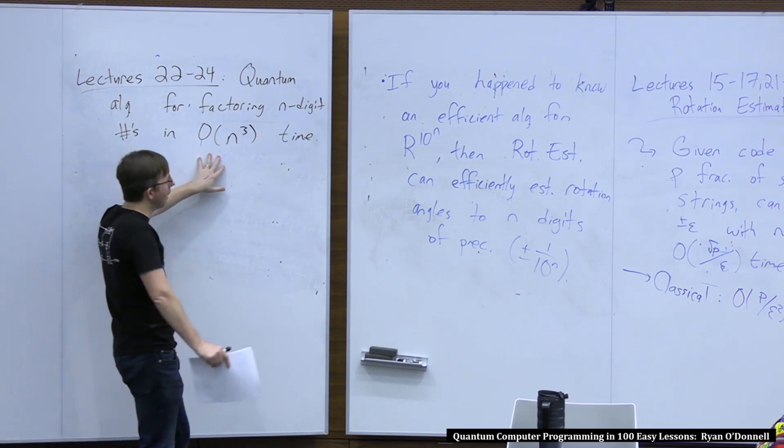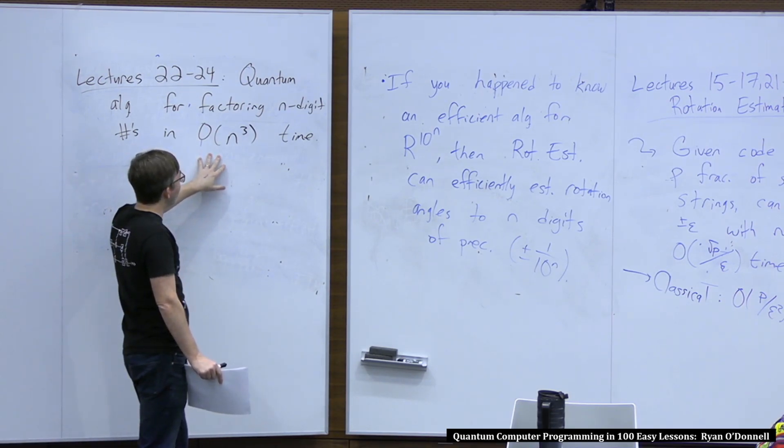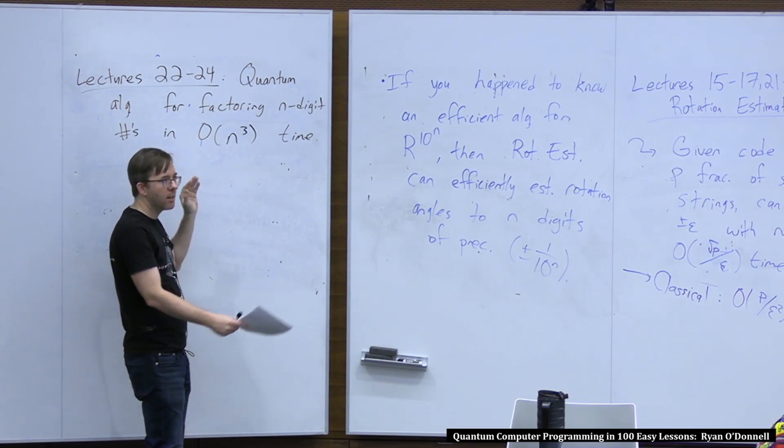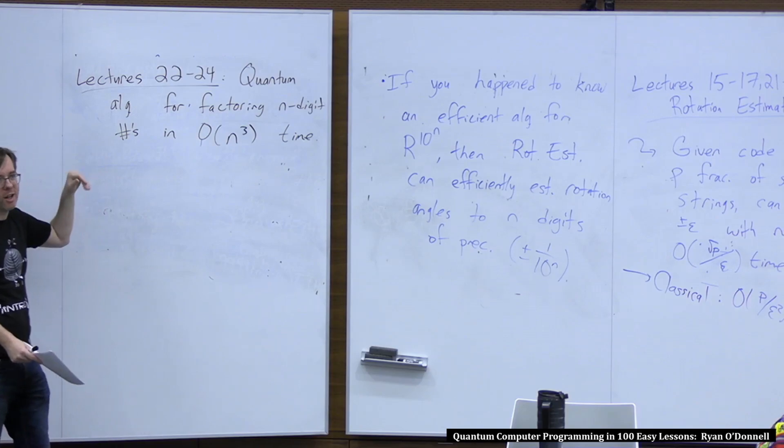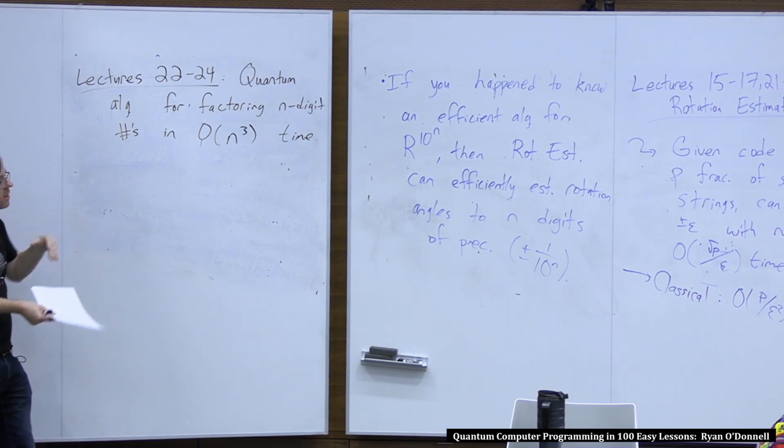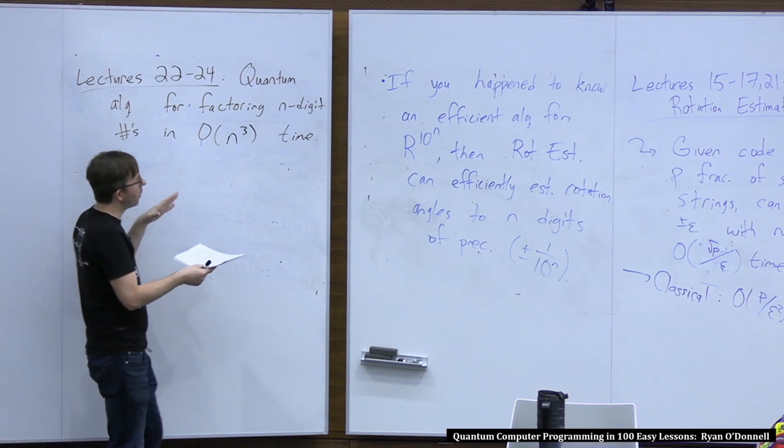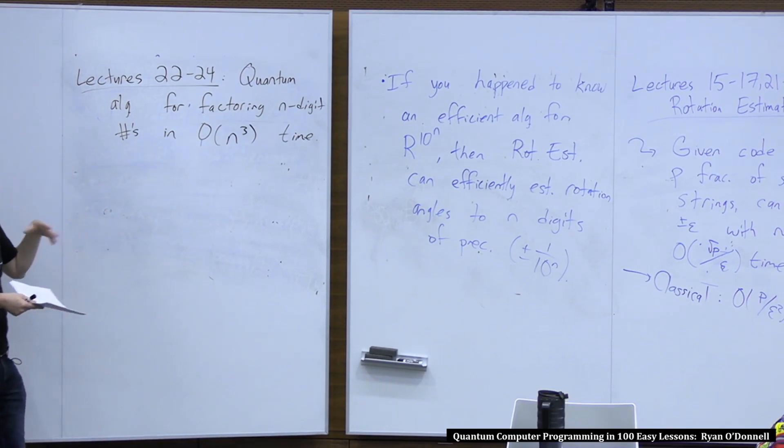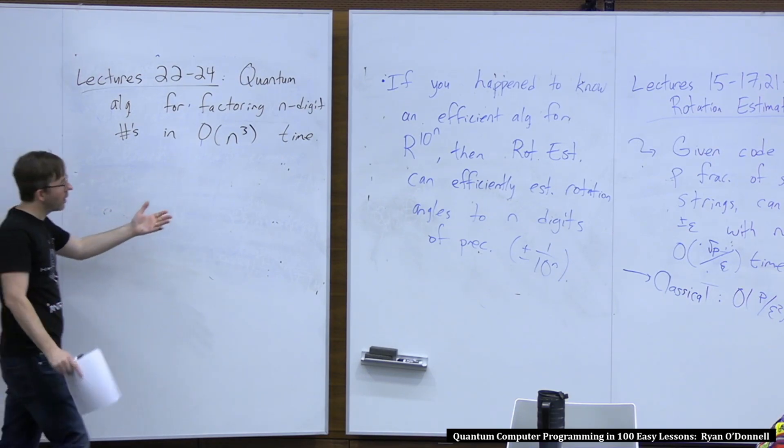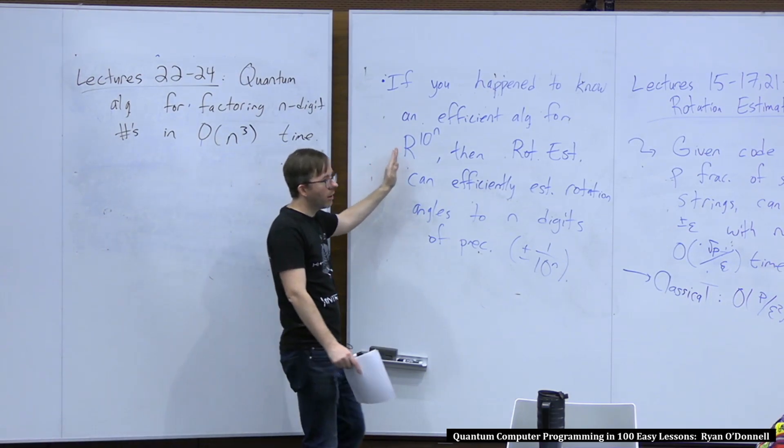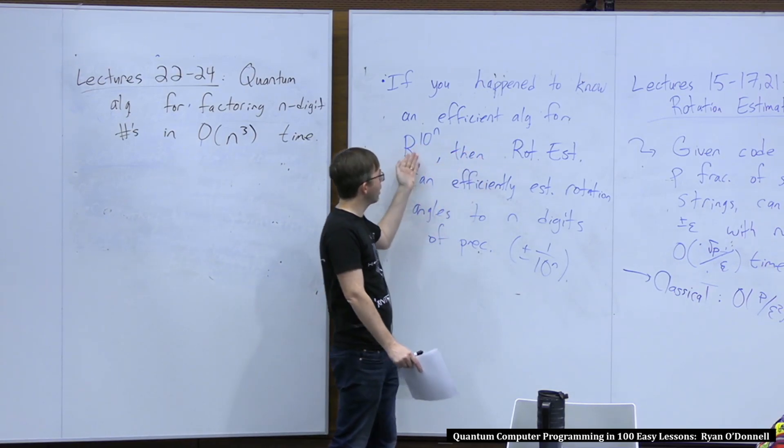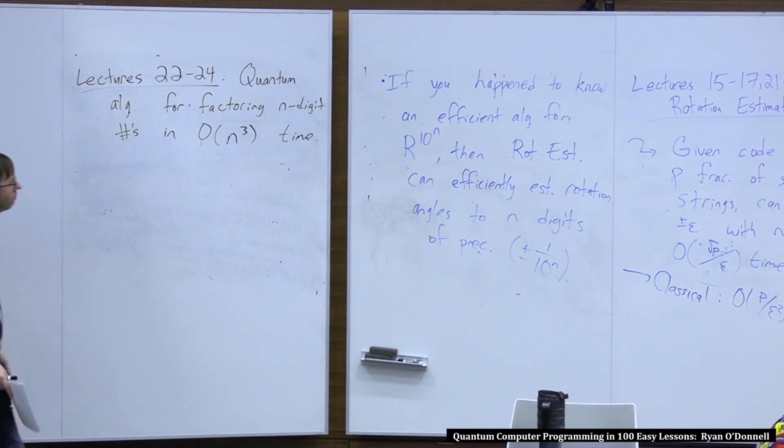But yeah, so finally, in lectures, I guess, 22 to 24, you may remember that we saw a quantum algorithm for factoring n-digit numbers. And we didn't actually do the calculations, but I'll just tell you, it's order n-cubes time or work. Yeah, but this order n-cubes is basically because the central quantum algorithm that you're doing rotation estimation on is multiplying. It's times 2 mod n or times b mod n. So it's basically multiplying two n-digit numbers. And the normal way of multiplying two n-digit numbers, the grade school way, which you would probably use in an actual implementation, is order n-squared time. And then in rotation estimation, you do that with r and r to the 10 and r to the 10-squared and all the way up to r to the 10 to the n. So that's where the other factor of n comes from.